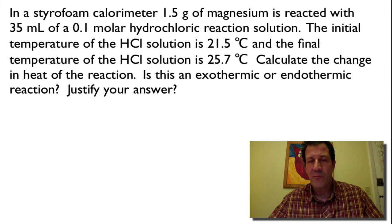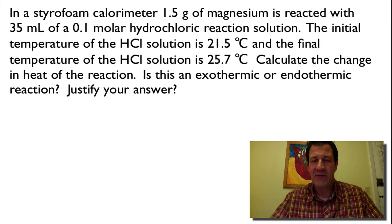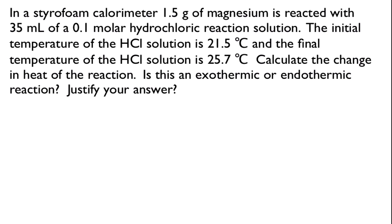Now let's do a couple of examples. Here we have a piece of magnesium — 1.5 grams of magnesium — reacted with 35 milliliters of hydrochloric acid solution, which is basically water with a little bit of hydrochloric acid in it, so we assume it's 35 milliliters of water. The initial temperature is 21.5°C. After the reaction is complete, it's 25.7°C. So the temperature has gone up — is that exothermic or endothermic? We're going to figure that out by calculating the change in heat of the reaction.